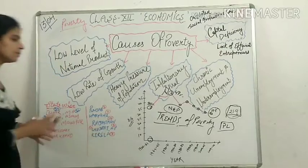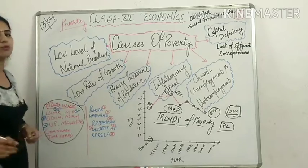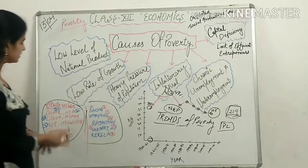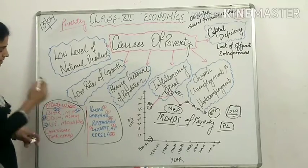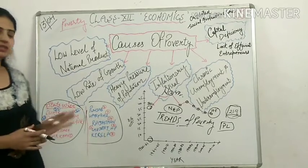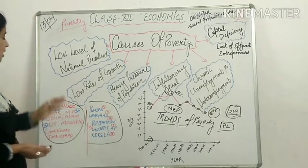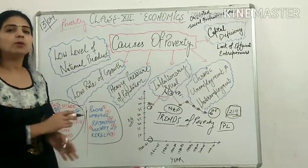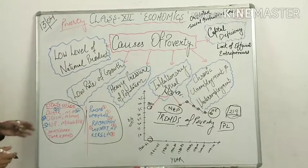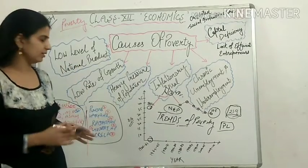When we compare states, some are facing high levels of poverty. States like Bihar, MP, Odisha, Assam, UP, Manipur, and Chhattisgarh are on high alert. Bihar has about 34% of its population below the poverty line, MP is around 32%, and Odisha is around 33–38%. These states are facing very high poverty rates, well above the national average.